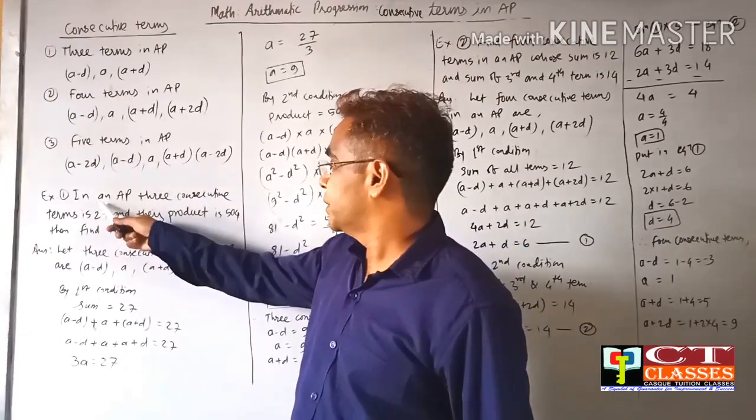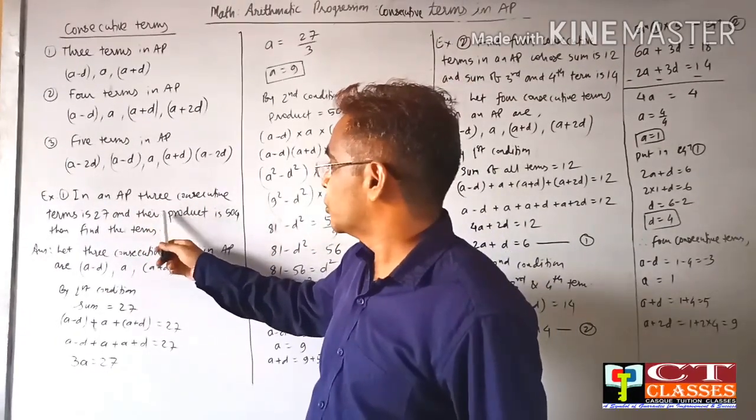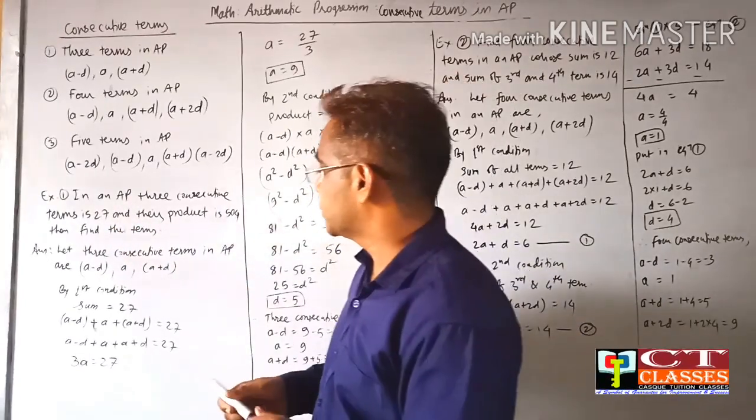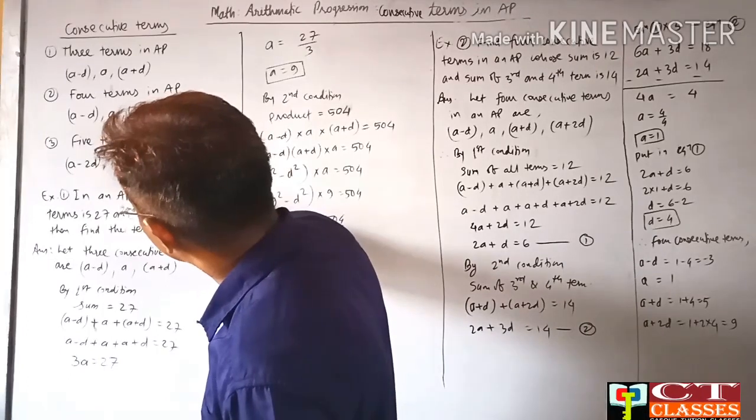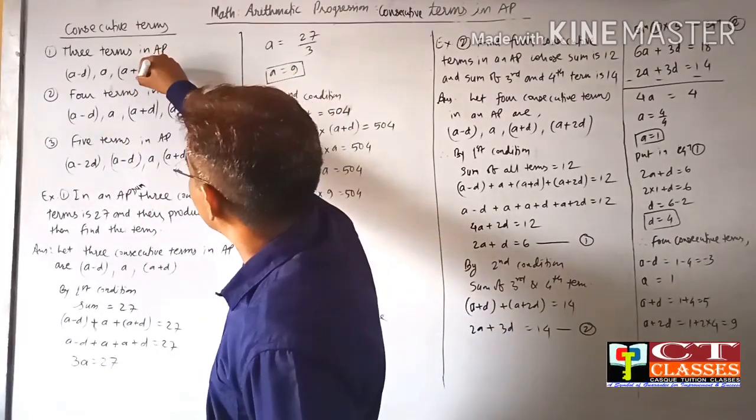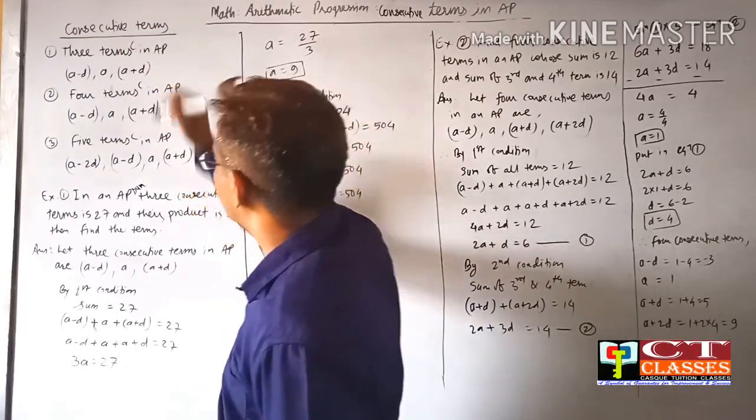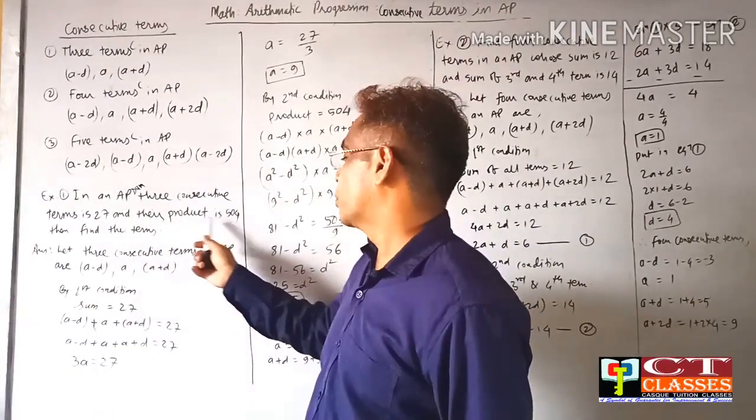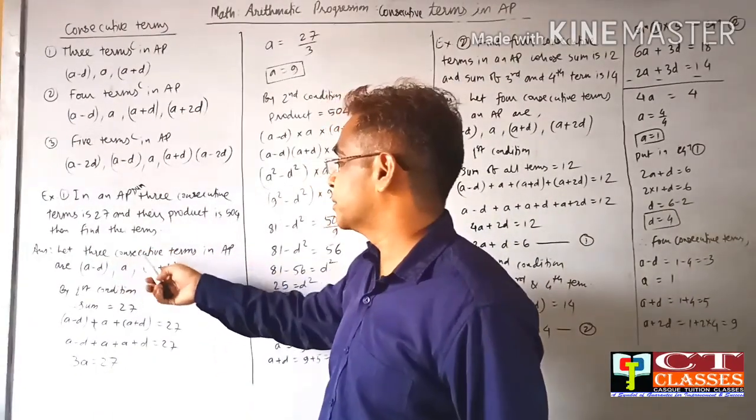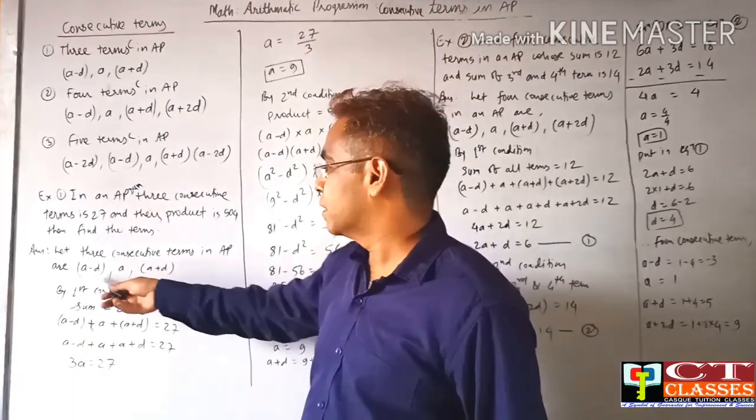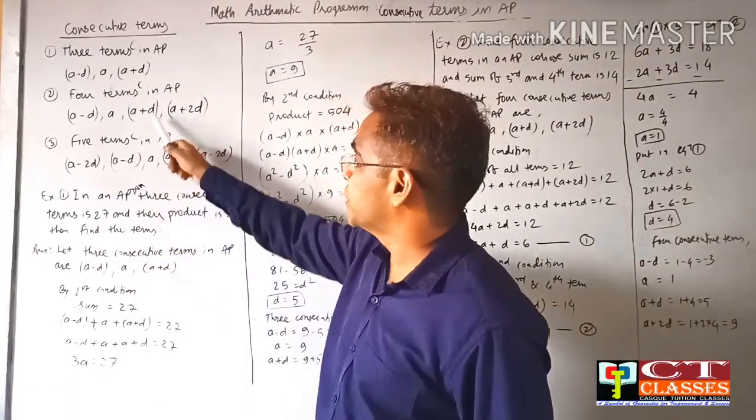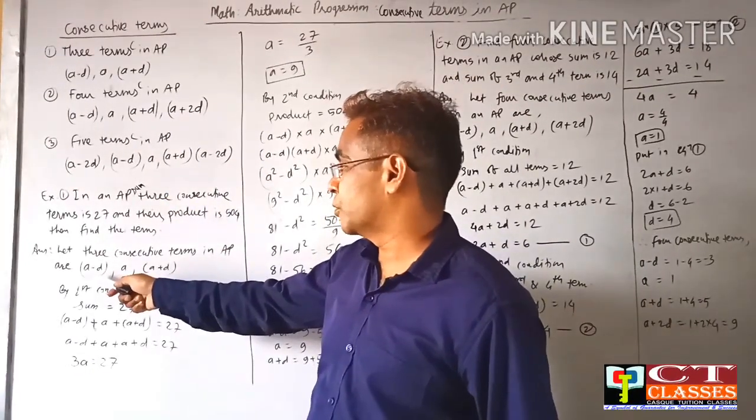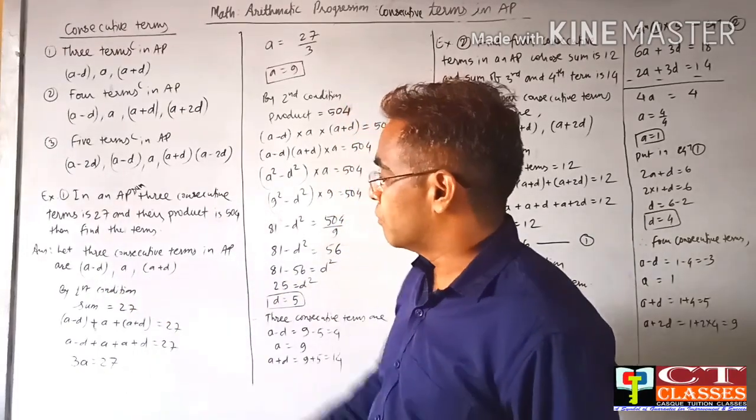Let's take an example in AP. Three consecutive terms: sum of three consecutive terms is 27 and their product is 504. Find the terms. Let three consecutive terms in AP be a-d, a, and a+d. First condition: